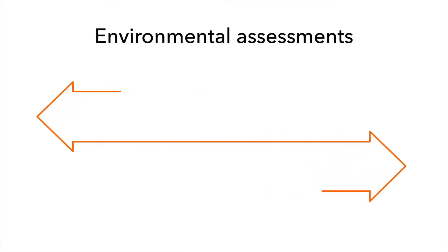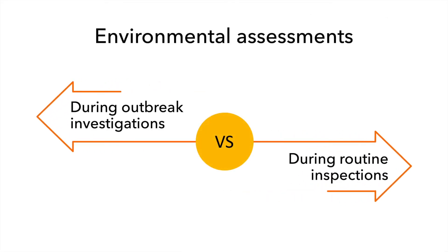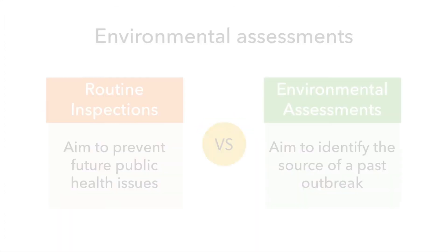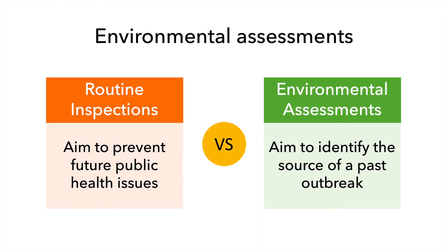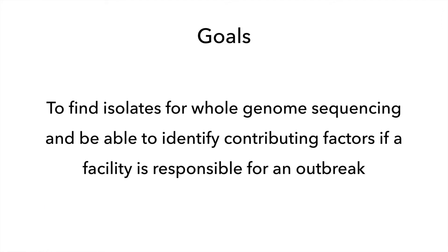Now let's discuss how environmental assessments during outbreak investigations are different from routine inspections. The main difference is that inspections have to prevent future public health issues, while environmental assessments identify the source of a past or ongoing outbreak. The goals of an environmental assessment during an outbreak investigation are to find isolates for whole genome sequencing and to identify contributing factors if a facility is responsible for an outbreak.